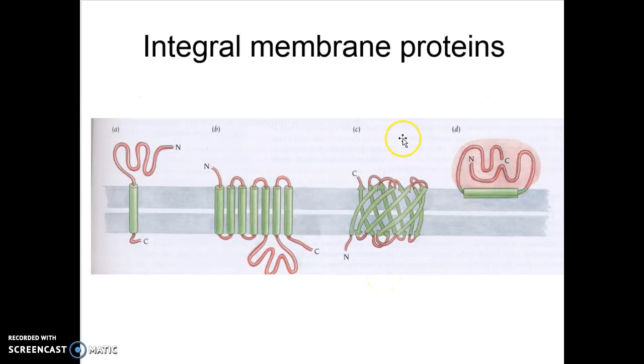Integral membrane proteins could be classified into four different types. Transmembrane domains composed of alpha helix in just a single transferring alpha helix, multiple number of alpha helices in B, and then in D you can see a protein anchored to the membrane by one alpha helix parallel to the plane of the membrane.